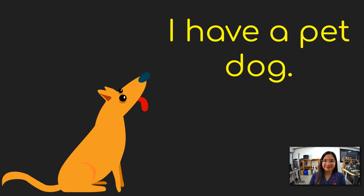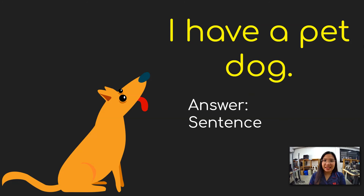Next. It says, "I have a pet dog." Is this one a sentence or a non-sentence? Yes, you are right. This one is an example of a sentence because it has a complete thought. It starts with a capital letter, and it ends with a punctuation mark.